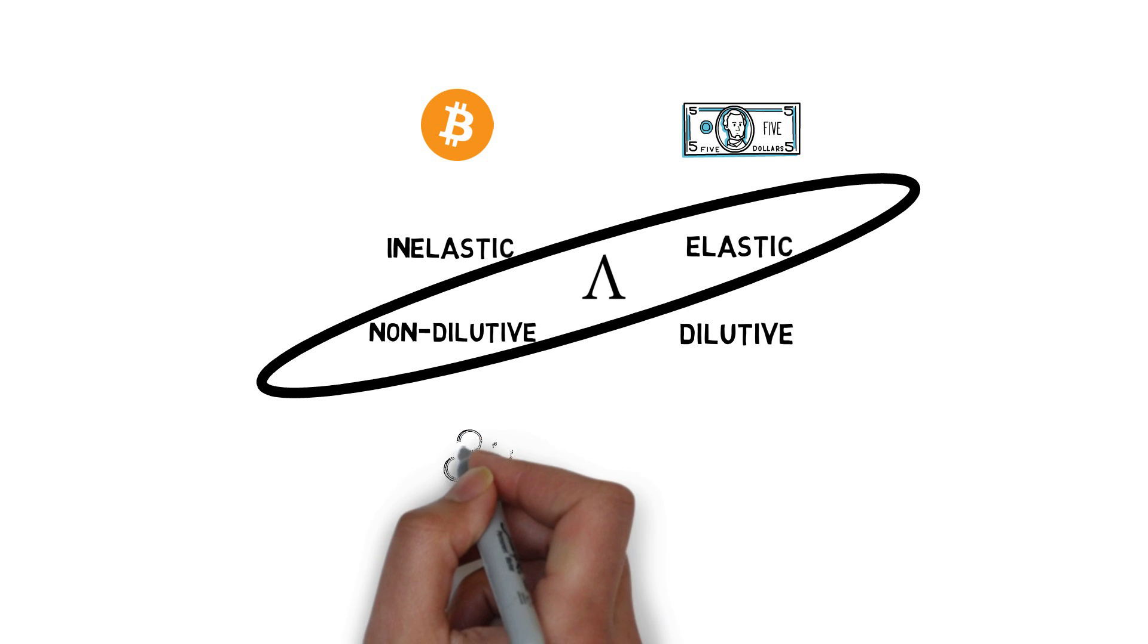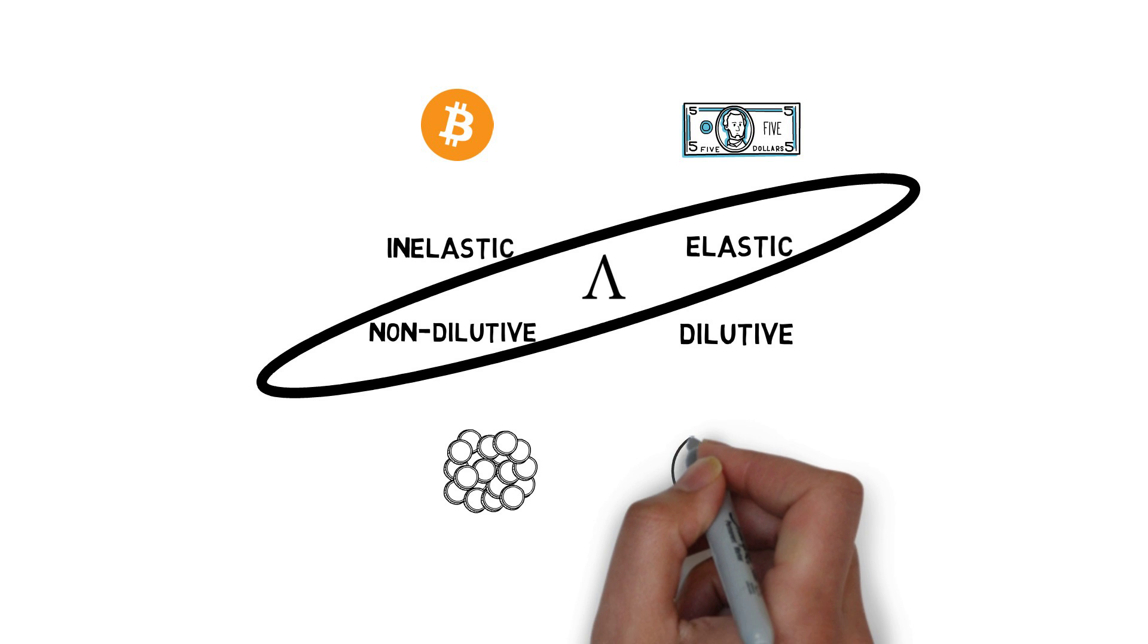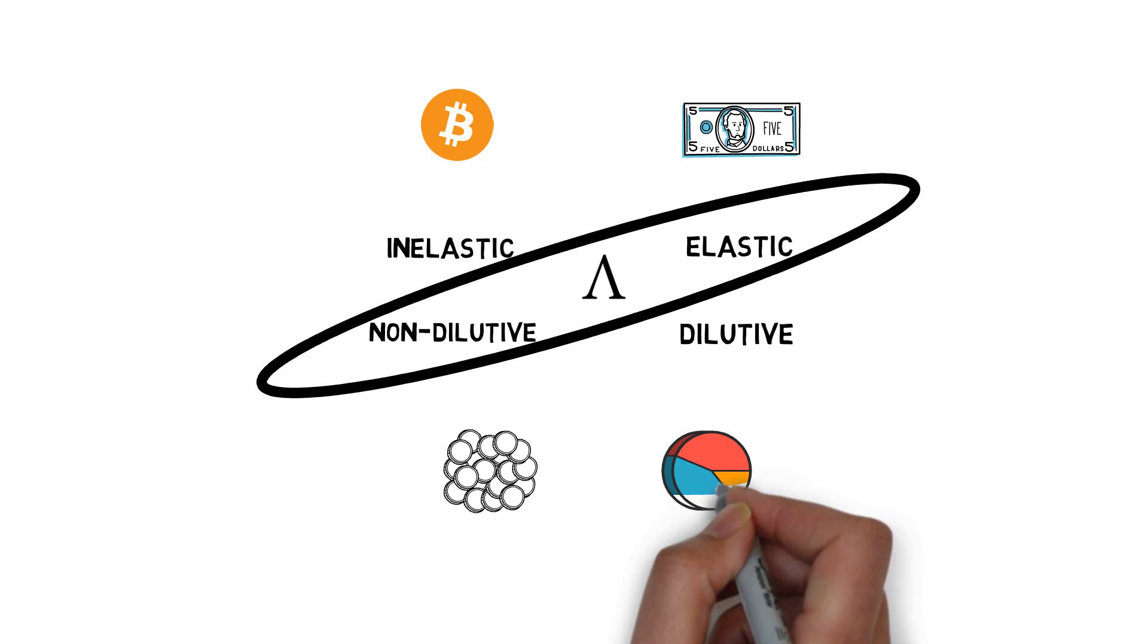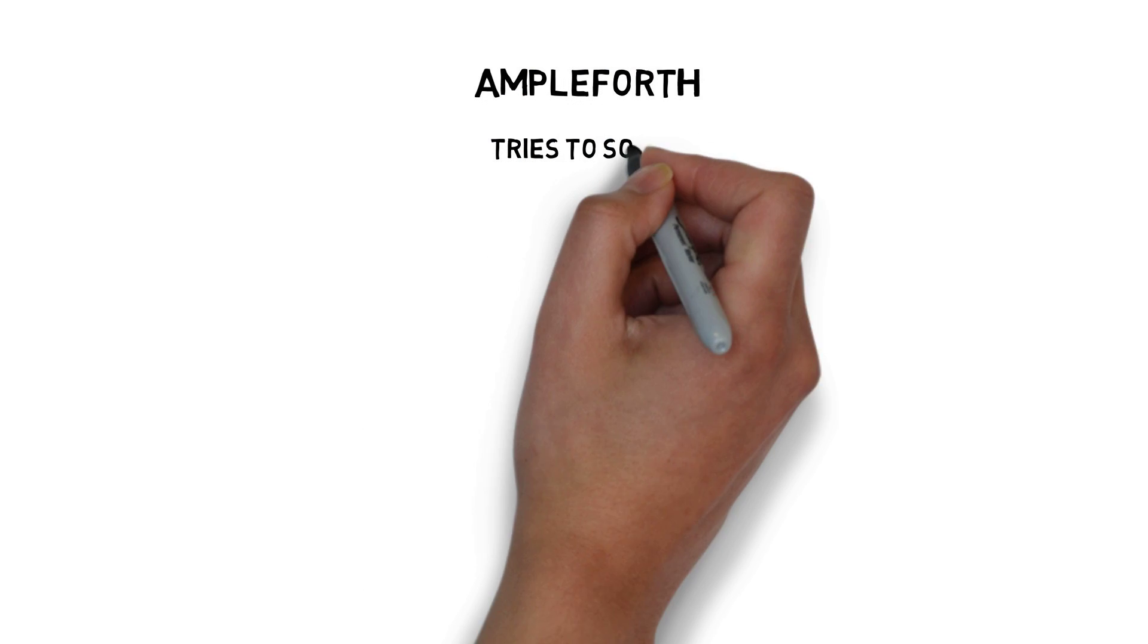So even though the number of your Ample tokens can change automatically, you'll always own the same proportion of the overall supply. By having this unique feature, Ampleforth tries to solve the following problems.